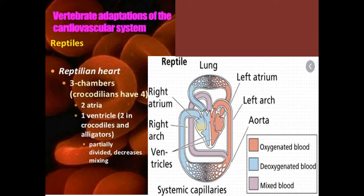Next is the cardiovascular system in reptiles. What are the adaptations present in reptiles? Reptiles mostly have three chambers: two atria and one ventricle. When we talk about crocodiles and alligators, there are four chambers — two atria and two ventricles.